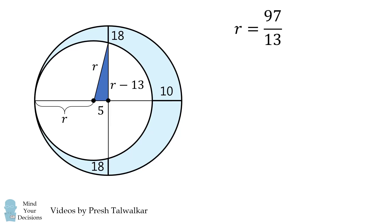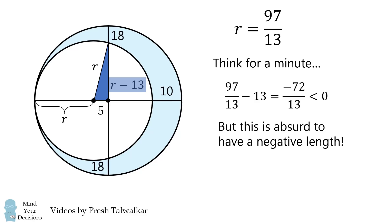Now before you go any further, you need to think for a minute. If R is equal to 97 over 13, what is the value of R minus 13? If you work it out, it's actually going to be a negative number, and this should raise a red flag. It is absurd to have a negative length in this geometry problem. So something has gone wrong.